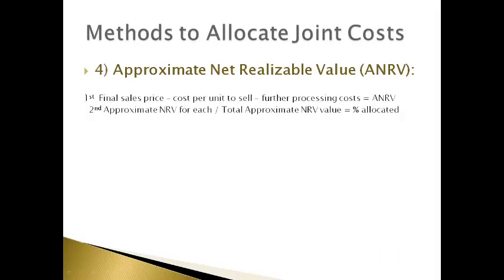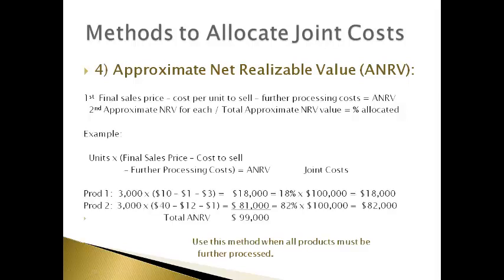The fourth method is called the approximate net realizable value method. Approximate net realizable value is equal to the final sales price less the cost per unit to sell products less the further processing cost. The approximate net realizable value is used to allocate the joint cost between products. A percent of the total approximate net realizable value is multiplied by the total joint cost to get the amount allocated to each product. This method is used when all products must be further processed before they are sold to customers.